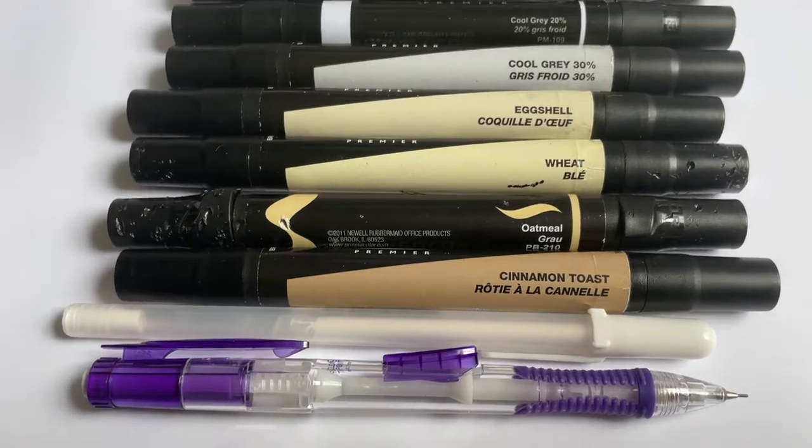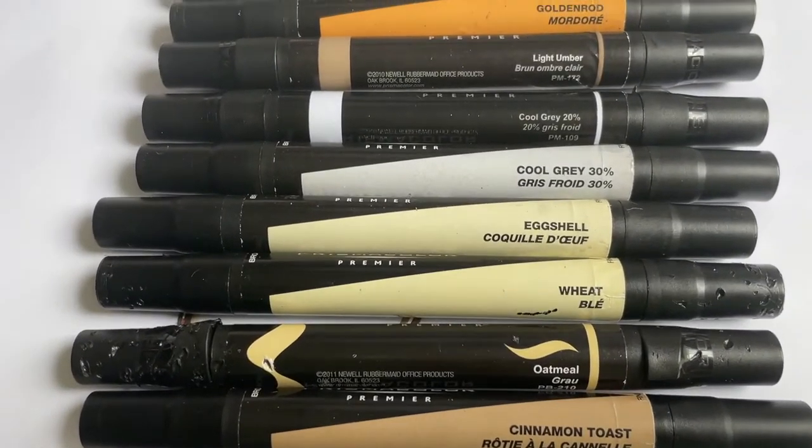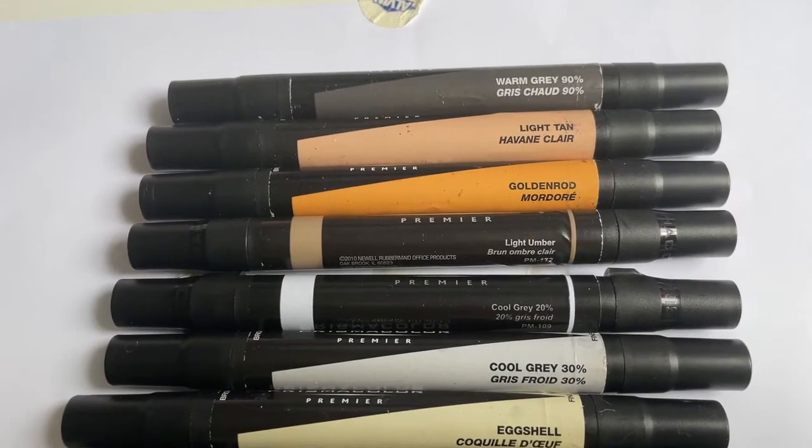These are the supplies I've used. I have cinnamon toast, oatmeal, wheat, eggshell, cool gray 30% and 20%, light umber, golden red, light tan and warm gray 90. And these are all Prismacolor.